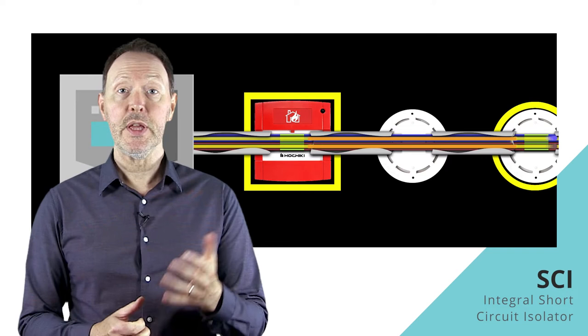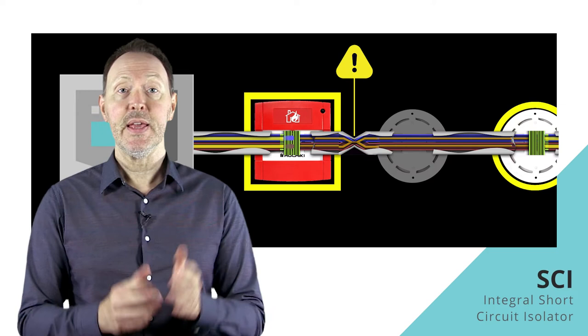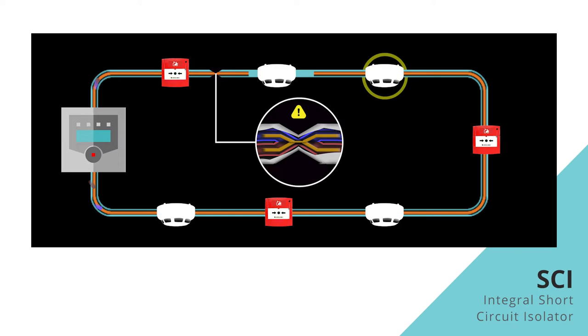If for any reason the voltage level drops below a set threshold, the isolators activate instantly, maintaining the loop voltage for the rest of the loop. So again, let's introduce the short circuit through damage to the loop cable here at this point, but instead of the loop voltage stopping and the panel losing communication with the loop devices, the isolators within these two devices now activate.